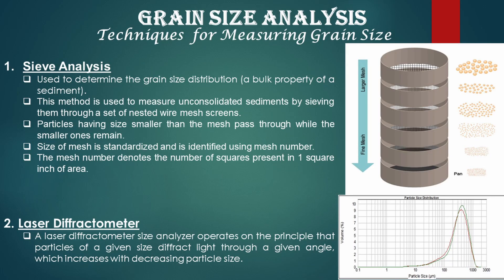There are several techniques for grain size analysis. Sieve analysis is used to determine the grain size distribution. This method measures unconsolidated sediments by sieving them through a set of nested wire mesh screens. Particles having a size smaller than the mesh pass through, while larger ones remain. The size of the mesh is standardized and identified using a mesh number, which denotes the number of squares present in one square inch of area.